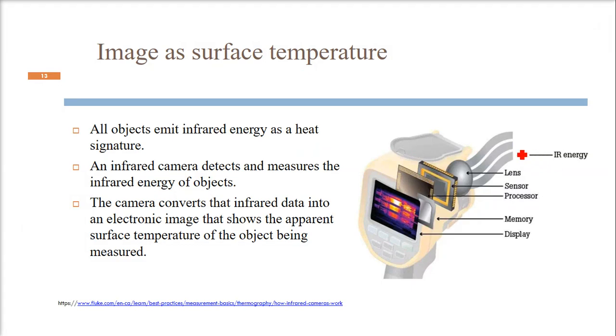How does it happen? Infrared energy comes into some lens, it focuses, we have a sensor, then a processor, memory, and this transfers into a display. All objects emit infrared energy as heat. Everybody has a heat signature. An infrared camera detects and measures the infrared energy of any object. The camera converts this infrared data into electronic image that shows the apparent surface temperature of the body being measured.